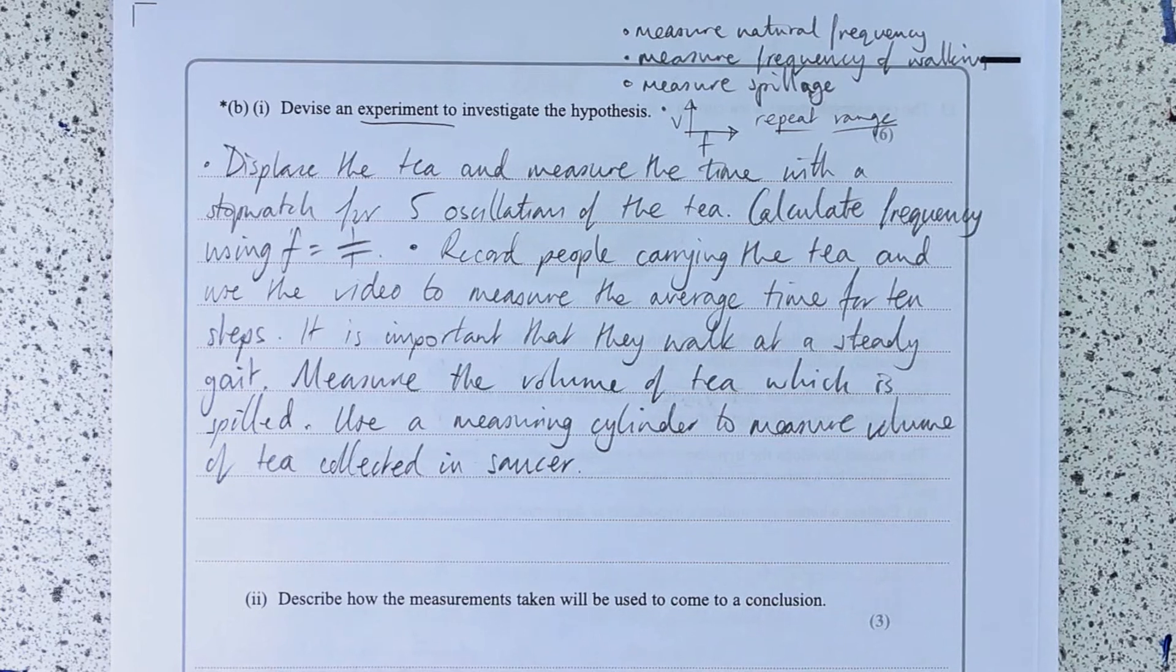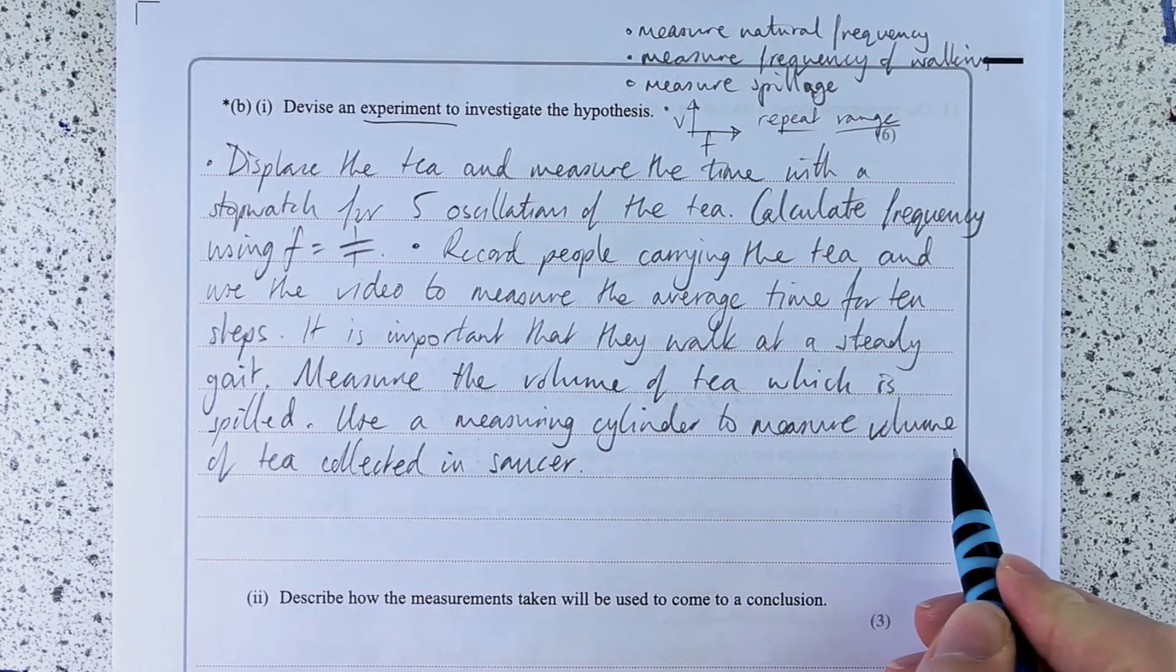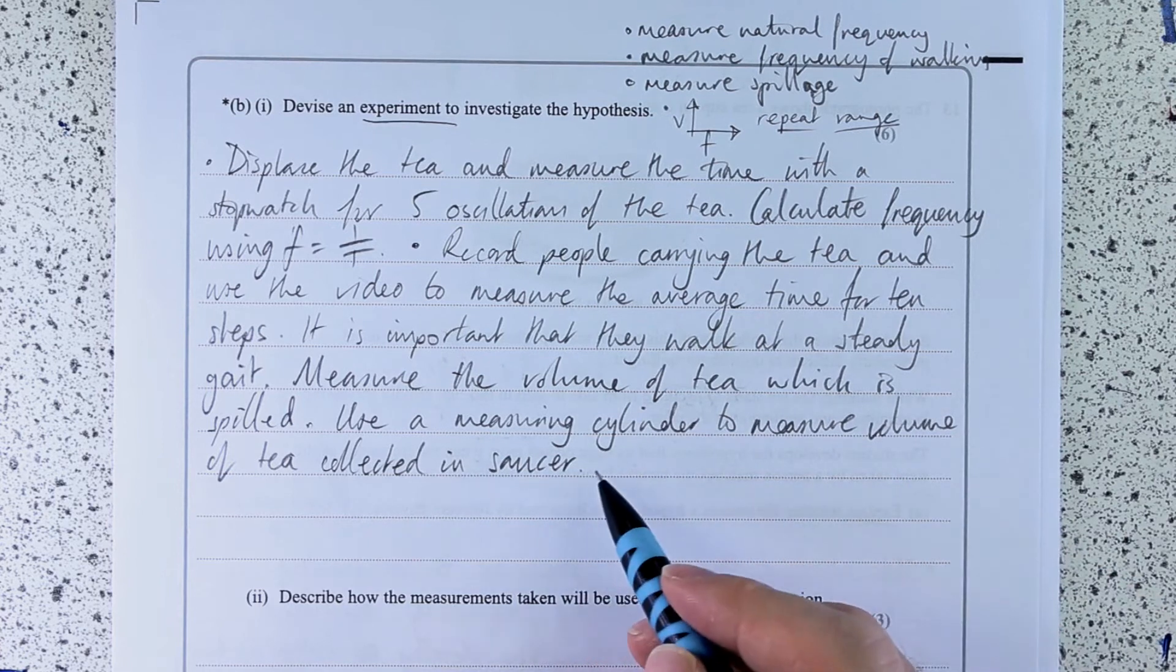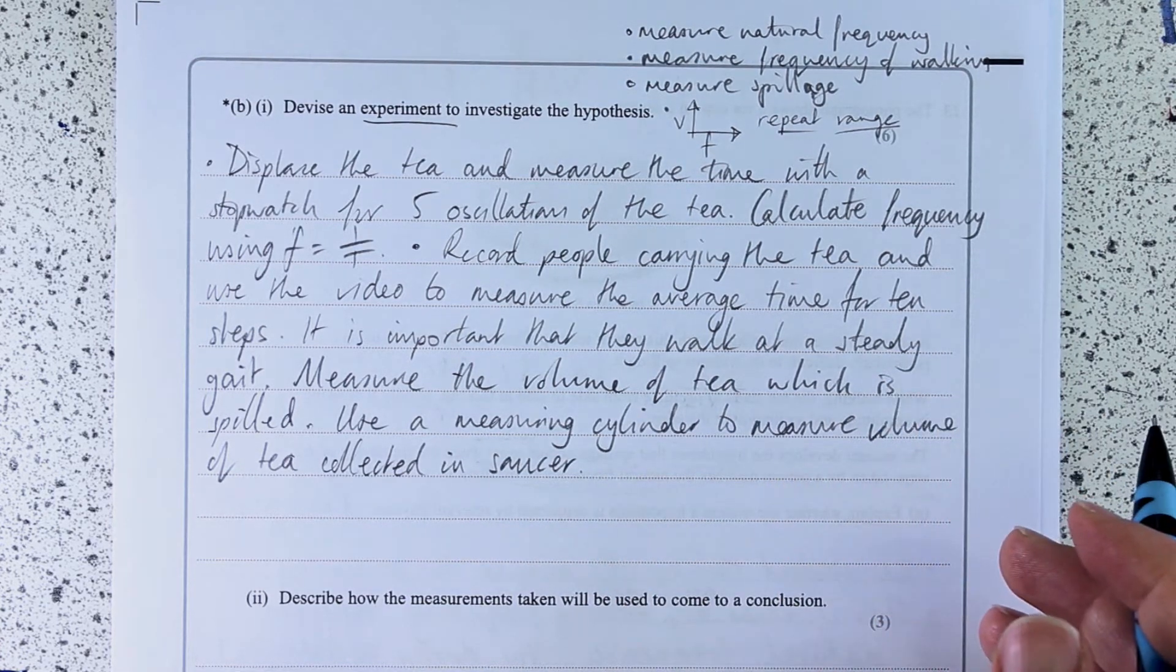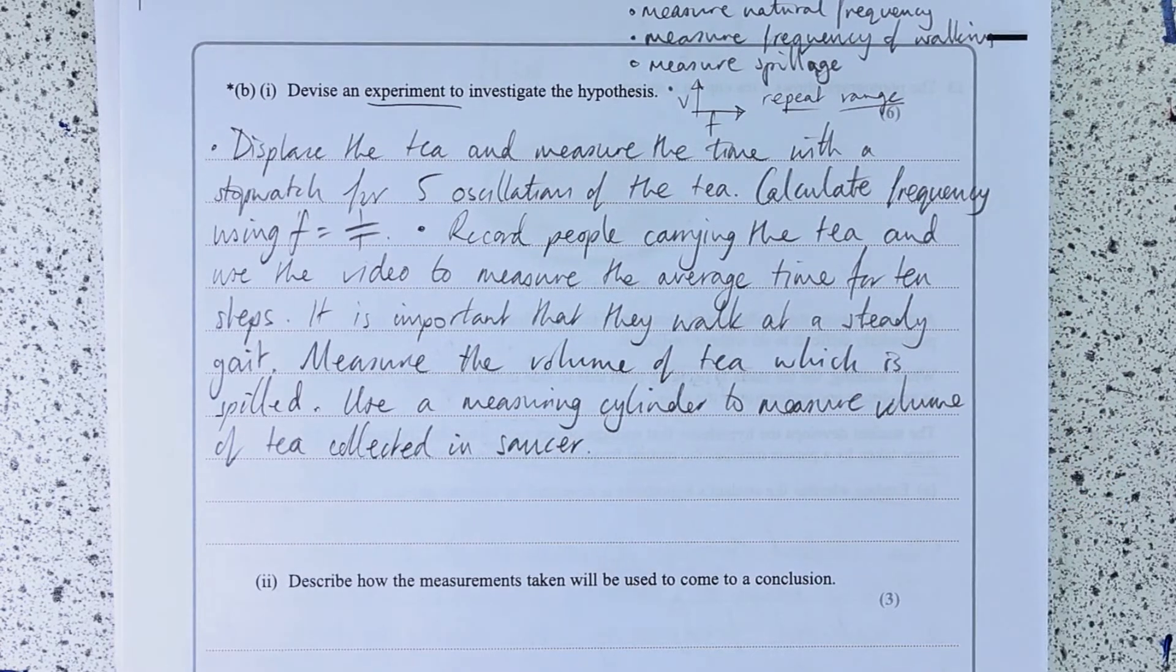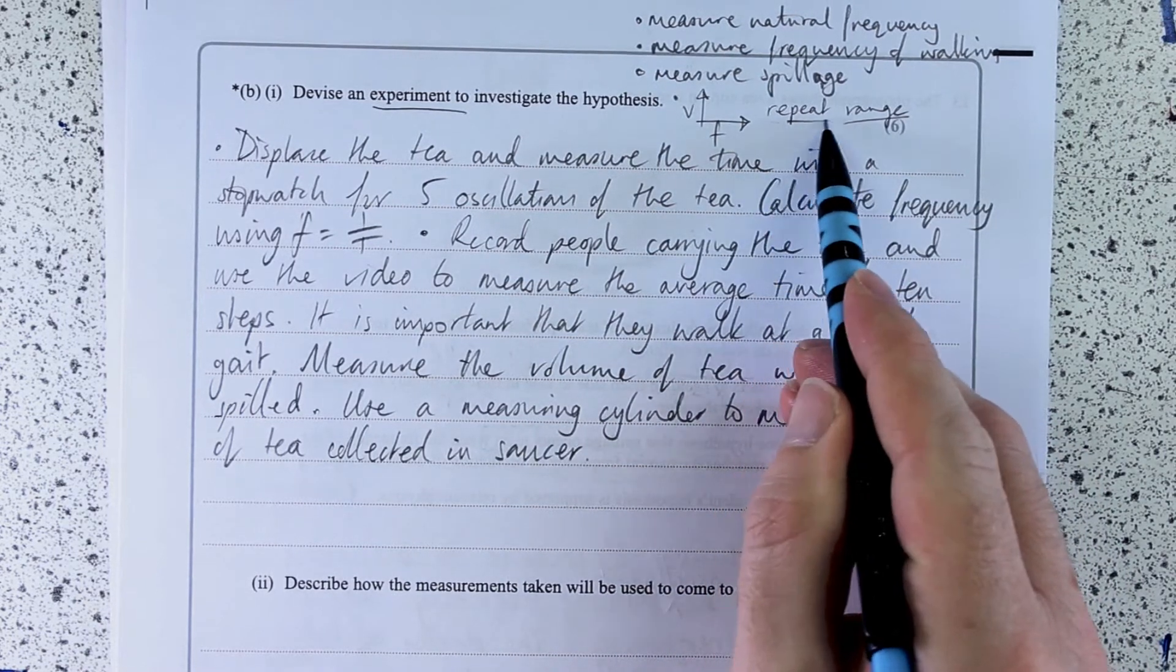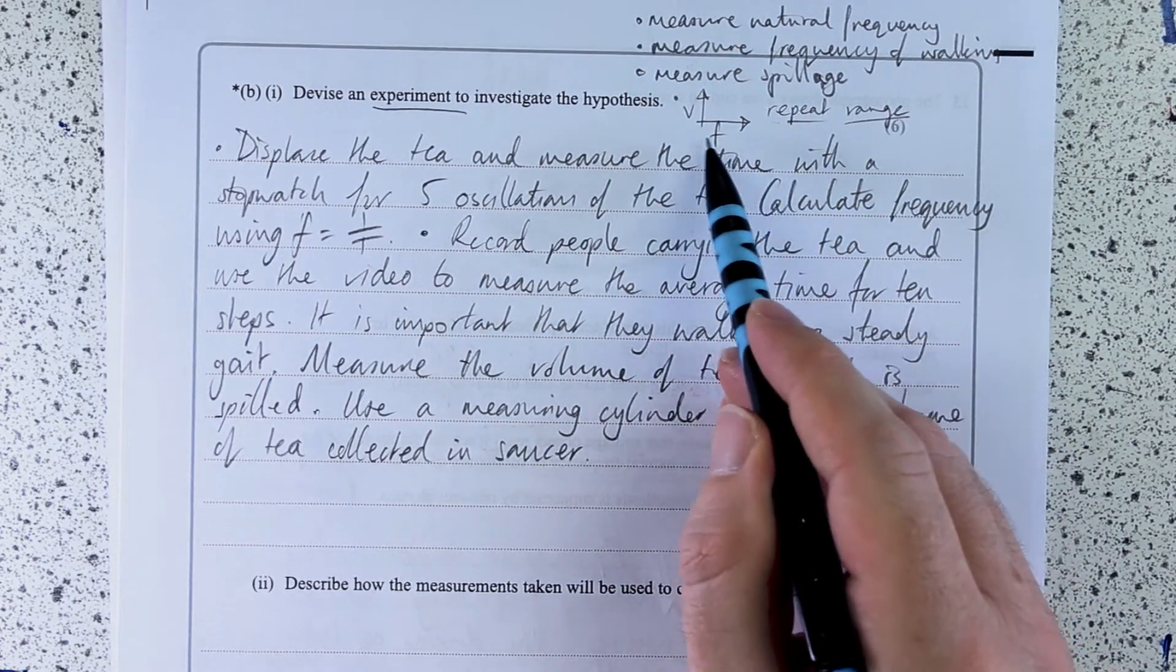I could even go into the detail about what size measuring cylinder to use, how to do that, get close to the scale for accuracy, things like that. But I'm going to talk of my things. I'm going to talk about making it reliable or plotting a graph.